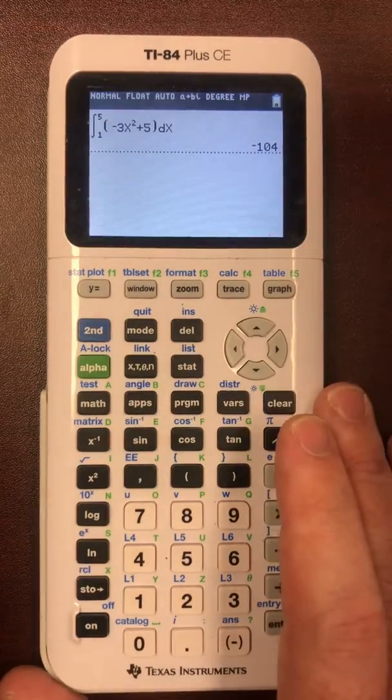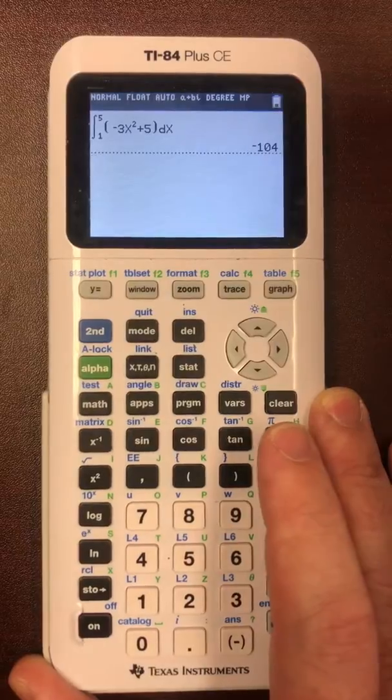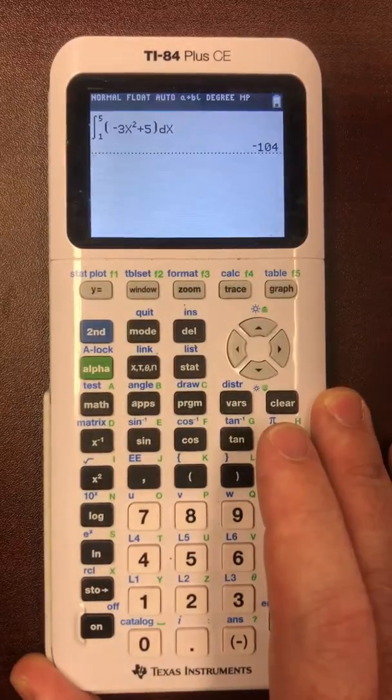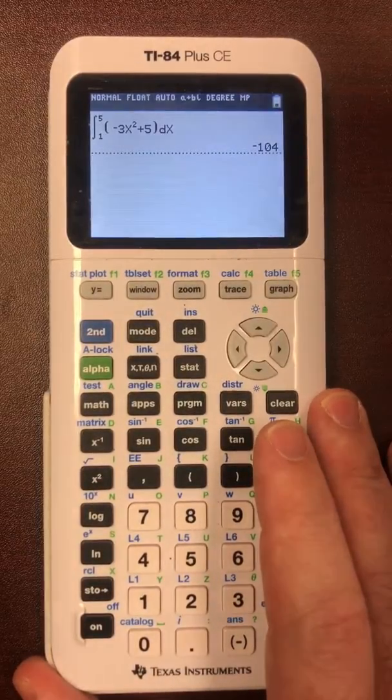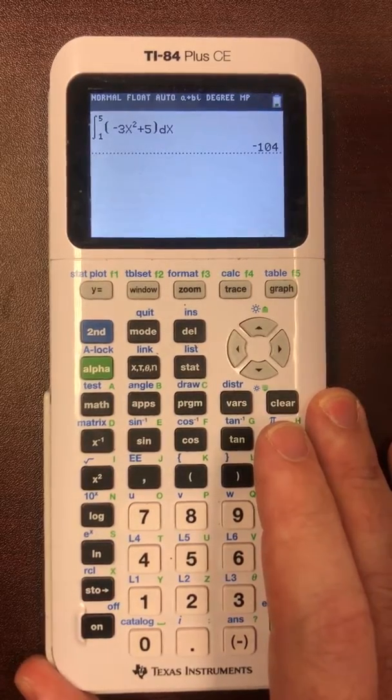Now you have to do the problem the right way first, but this is excellent to be able to check your work because if you go back and you plug in 1 to 5 for your answer and you don't get negative 104, then you should go back because you made an error somewhere.